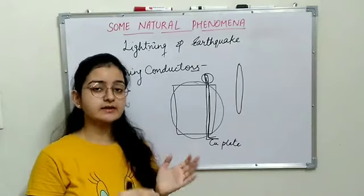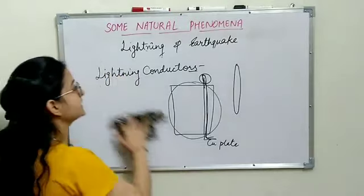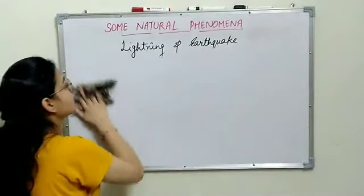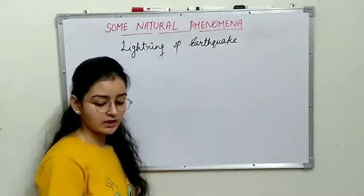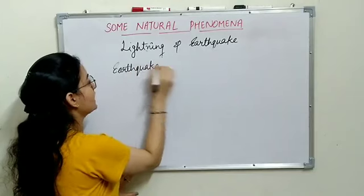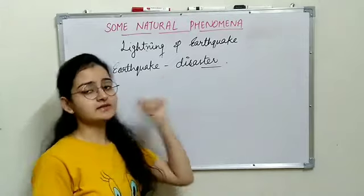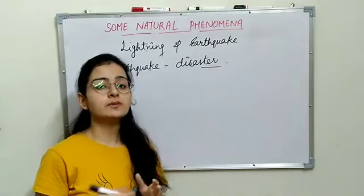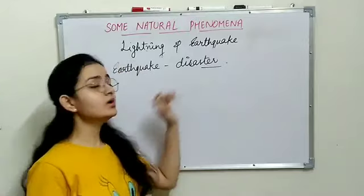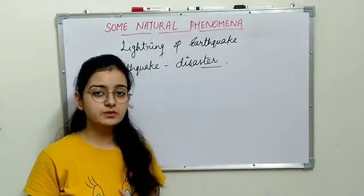So that was about lightning — our first natural phenomenon. I hope it's clear to you all. Now we will discuss our second phenomenon: earthquake. What is an earthquake? When the Earth shakes and trembles, that is called an earthquake. It is called a disaster because it is unpredictable and causes sudden, large-scale destruction to human life and property.